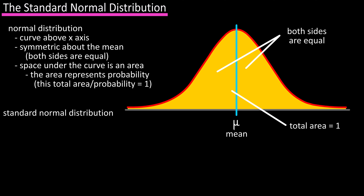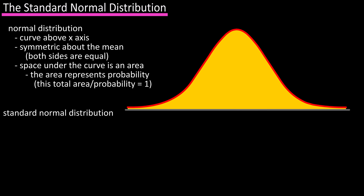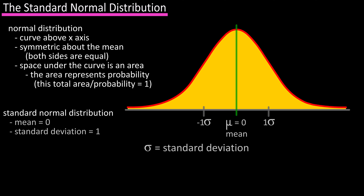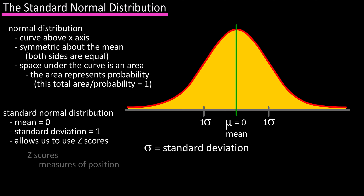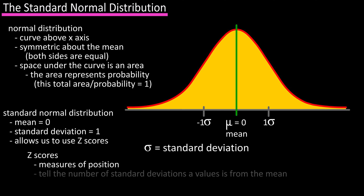The standard normal distribution makes two modifications: the mean is zero and the standard deviation is one. This is important because it allows us to use z-scores, and z-scores are measures of position that tell us the number of standard deviations a value is from the mean.